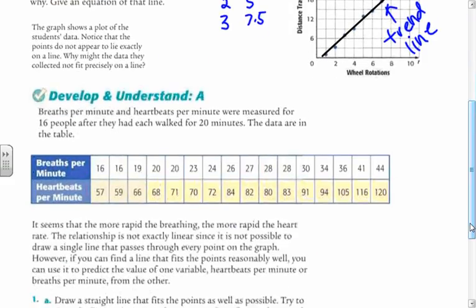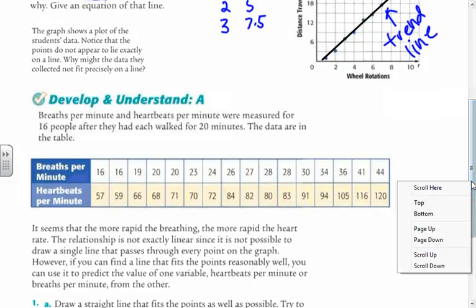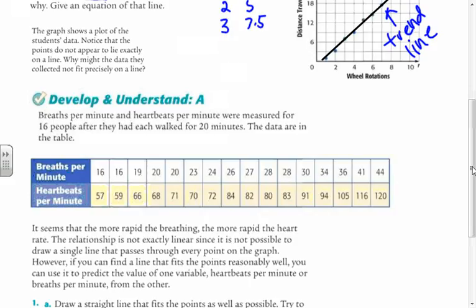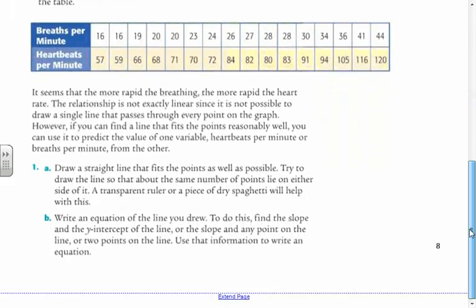In this problem, breaths per minute and heartbeats per minute were measured for 16 people after they had each walked for 20 minutes. The data are on the table. So here's the data. Now what you should expect is that as people walk, there should be some sort of relationship between the number of breaths per minute they have and the number of heartbeats per minute. If they have more heartbeats, they should have more breaths, and we should see that trend.